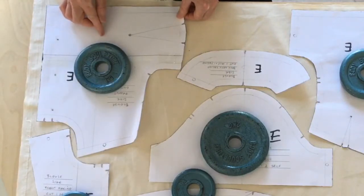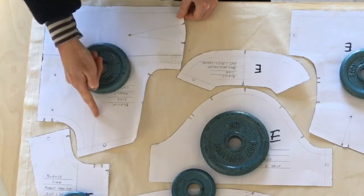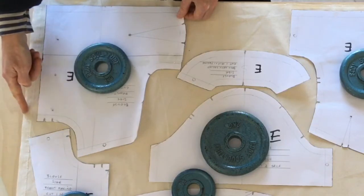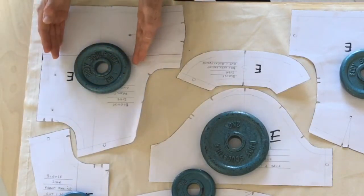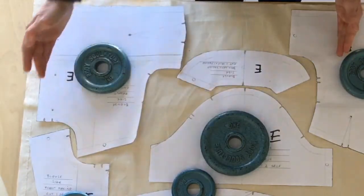Now I am measuring from this line out to the edge here to make sure that it is straight. I need two of these - the instructions are cut two, cut one on the fold.